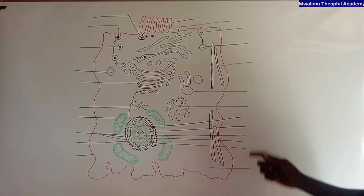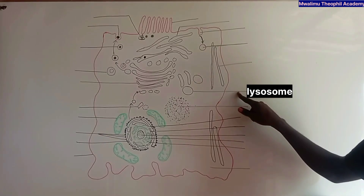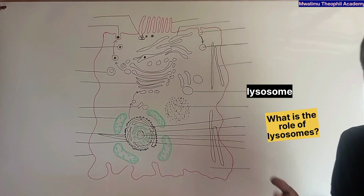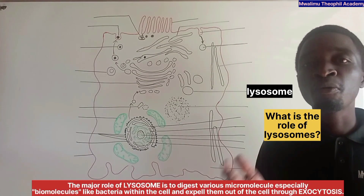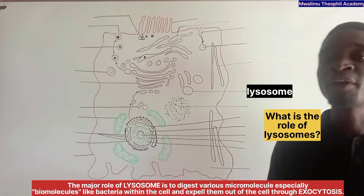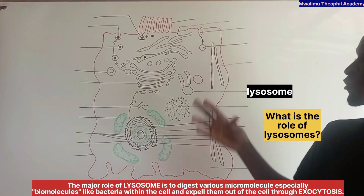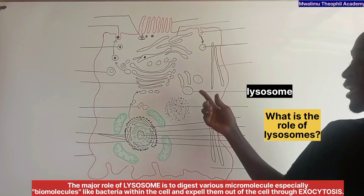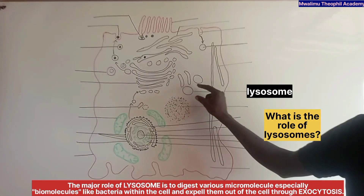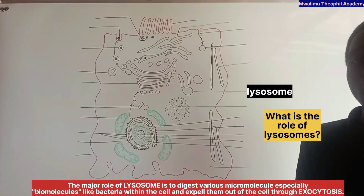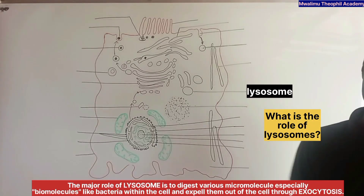These are lysosomes. The role of lysosomes is to break down various materials which are not needed within the cell. For example, foreign materials like bacteria are broken down and expelled out through exocytosis.